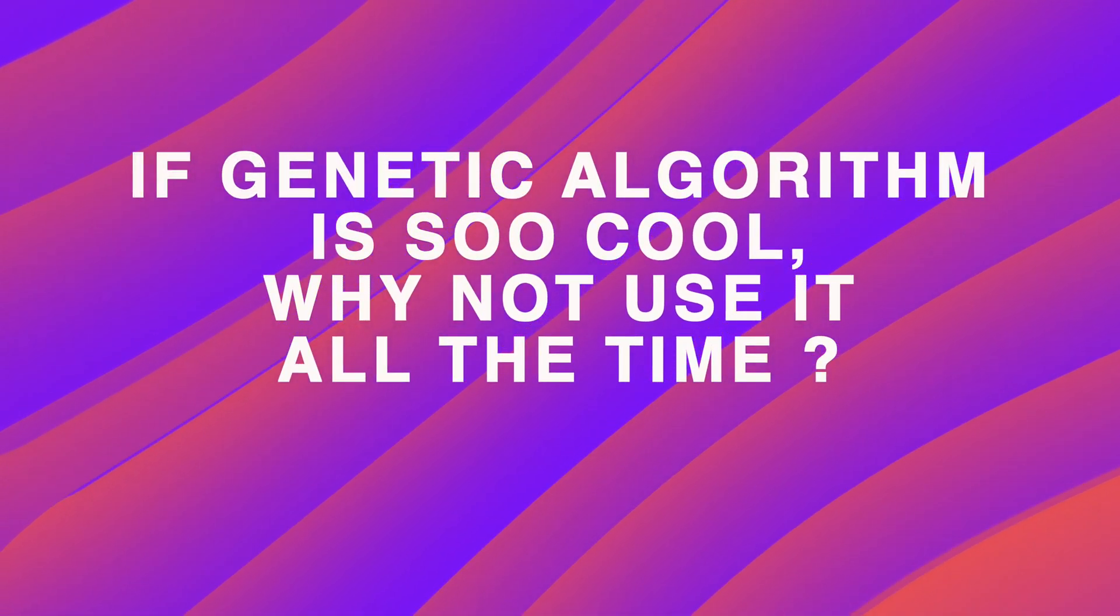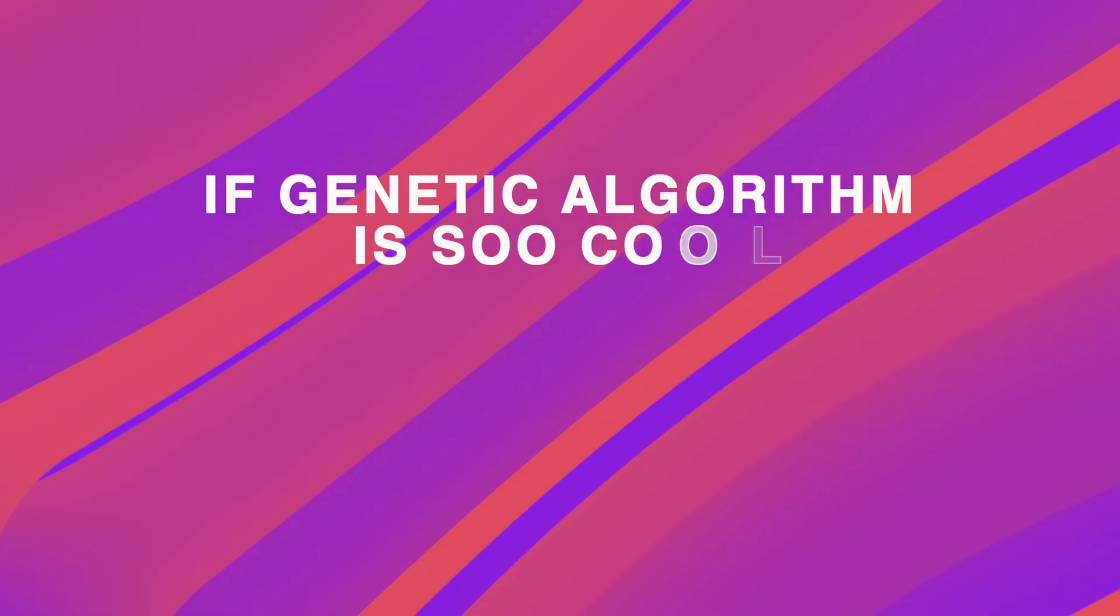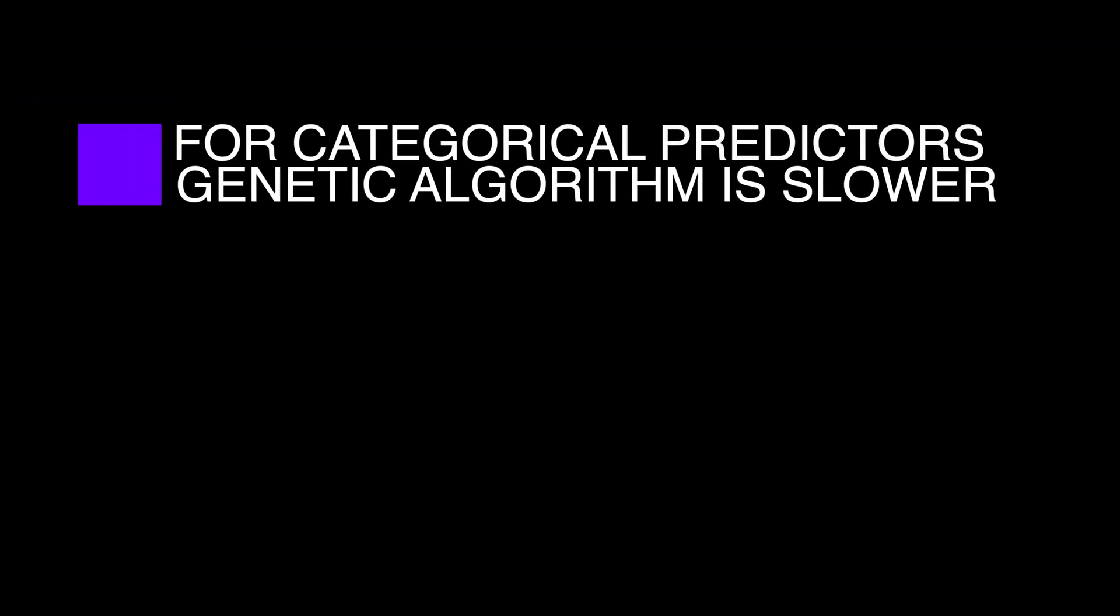So, if genetic algorithm is so cool, why not use genetic algorithm all the time? Well, interestingly enough, with categorical predictors having a lot of categories, genetic algorithms may perform slower as compared to the exhaustive one.